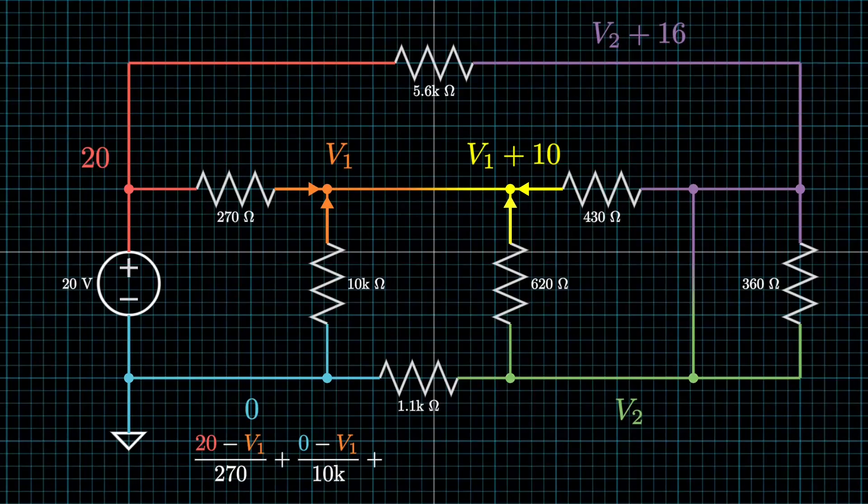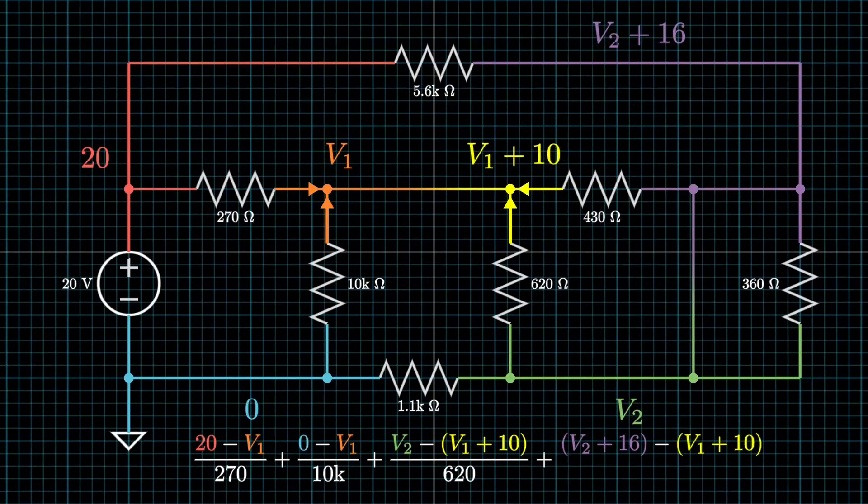So, for example, let's take a look at this current over here. This would be V2 minus V1 plus 10 instead of V1. Yes, although they're technically the same node, they have different voltages. And I denote that by using a different color. So we're going to divide by 620 and we're going to continue off. Again, this yellow current over here is going to be V2 plus 16 minus V1 plus 10. Not just simply V1 because, like I said, it's a different voltage. Okay, we divide by the resistance and Kirchhoff's current law holds. All of them equals to zero.